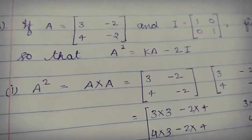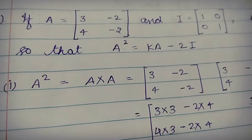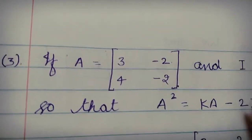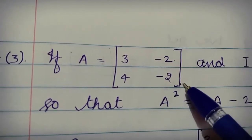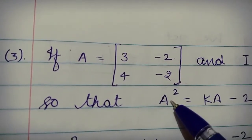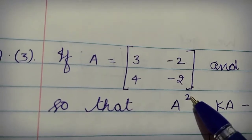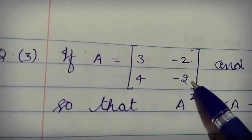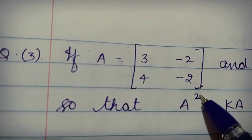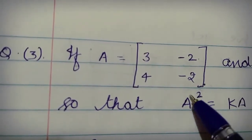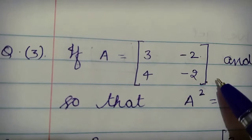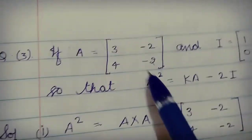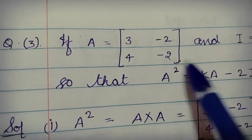Before the next question, there is a very important point: A squared does not mean squaring each individual element of matrix A. That is completely wrong. A squared means matrix A multiplied by matrix A. In any case, A squared equals A times A — you must never square the elements individually.